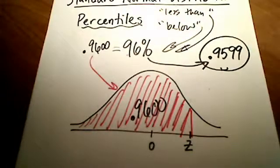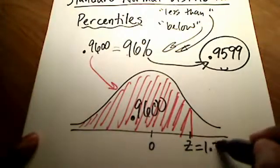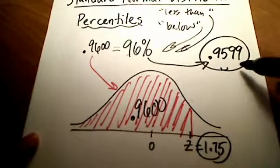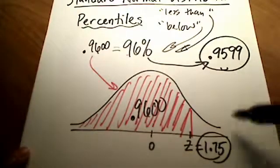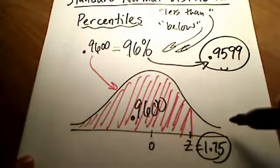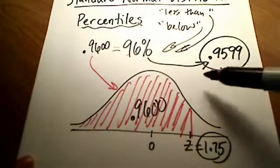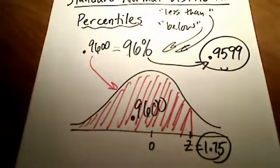Now, what Z number corresponds to that? I get a Z number of 1.75 that corresponds to this .9599. So sometimes on MyMathLab or in your book homework, it asks, what is the Z score that corresponds to a 96th percentile?